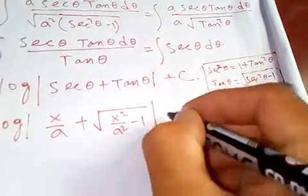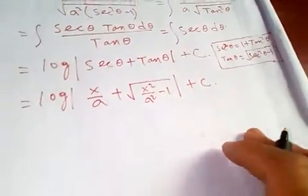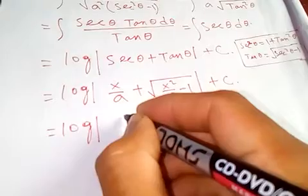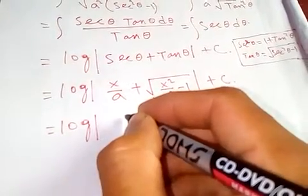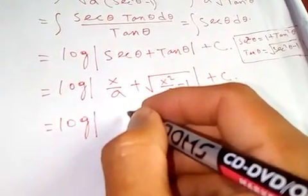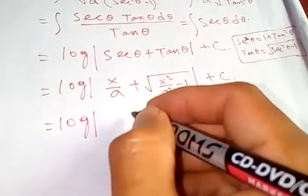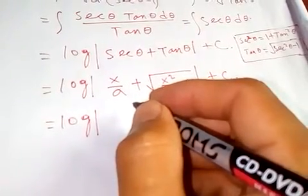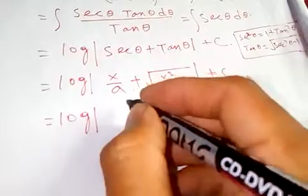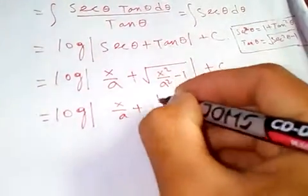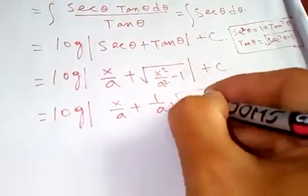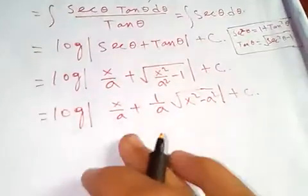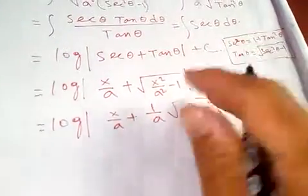If you simplify, you get x over a plus 1 over a times square root of x squared minus a squared, plus constant of integration. We are nearly done.